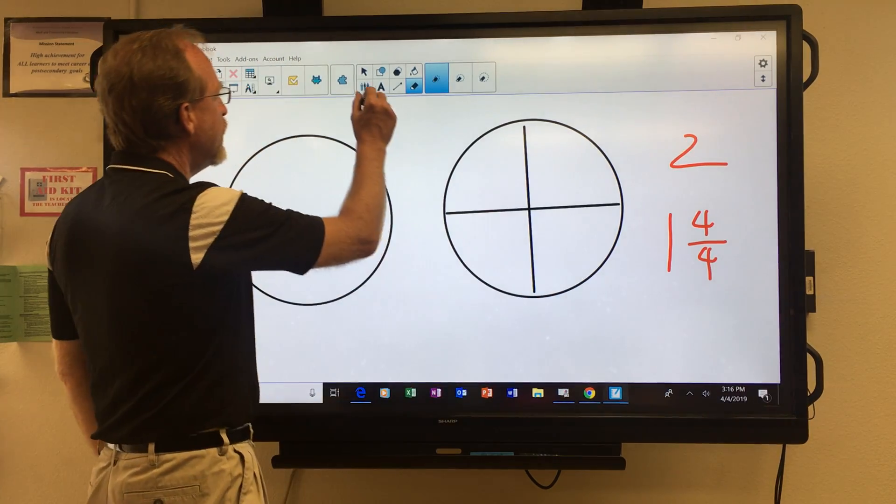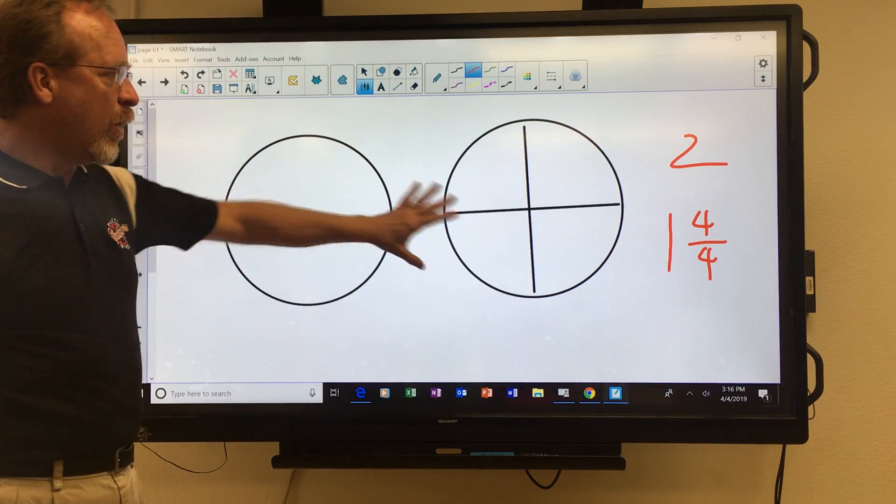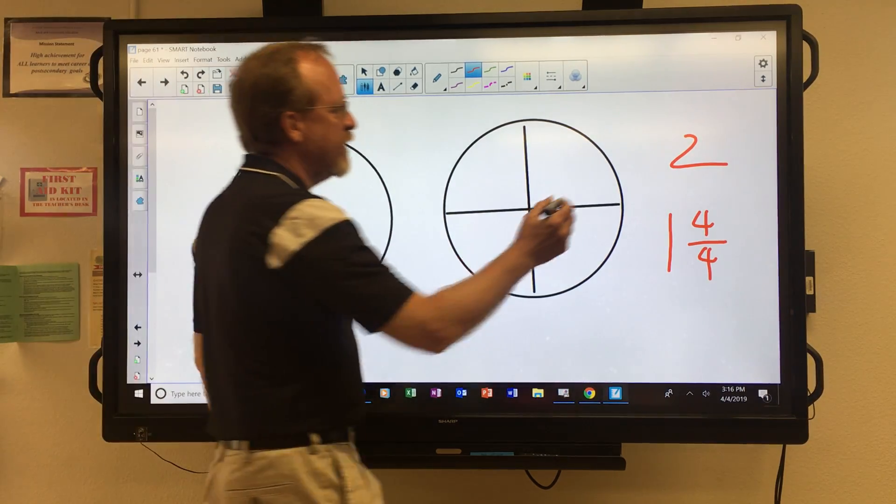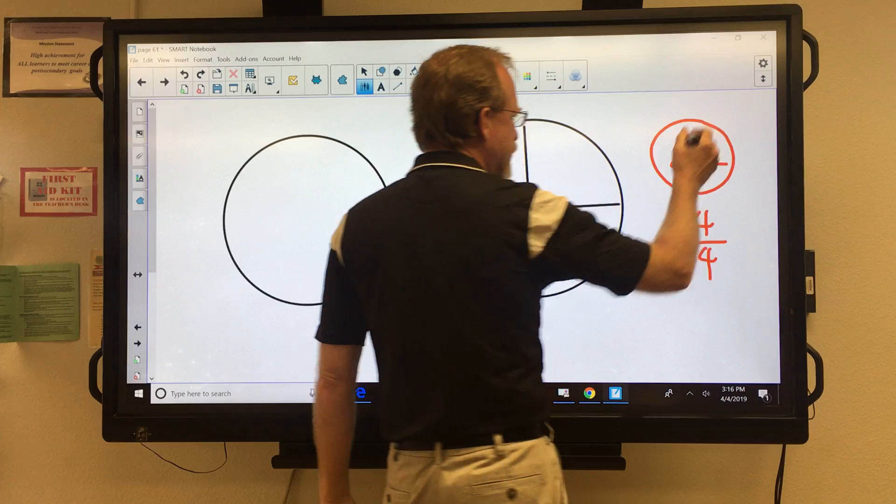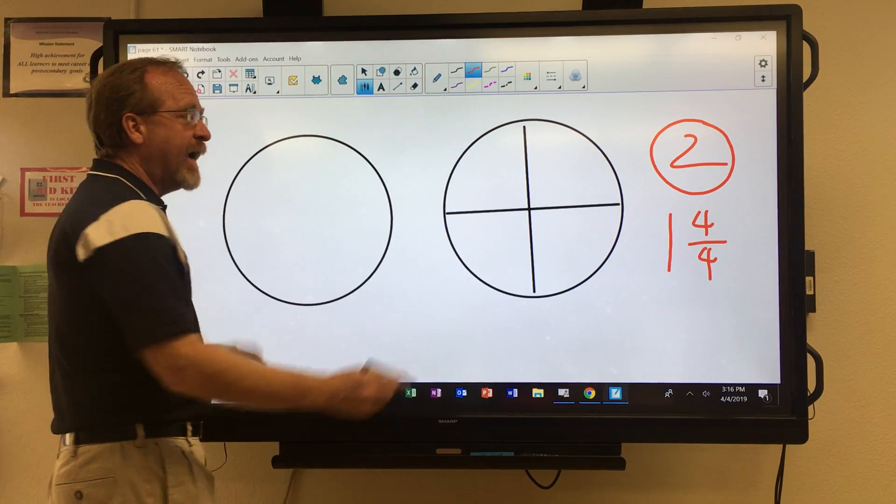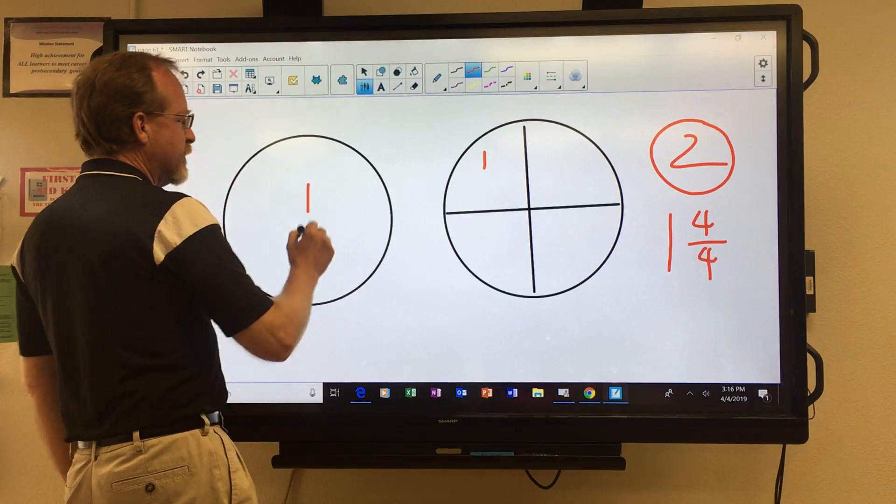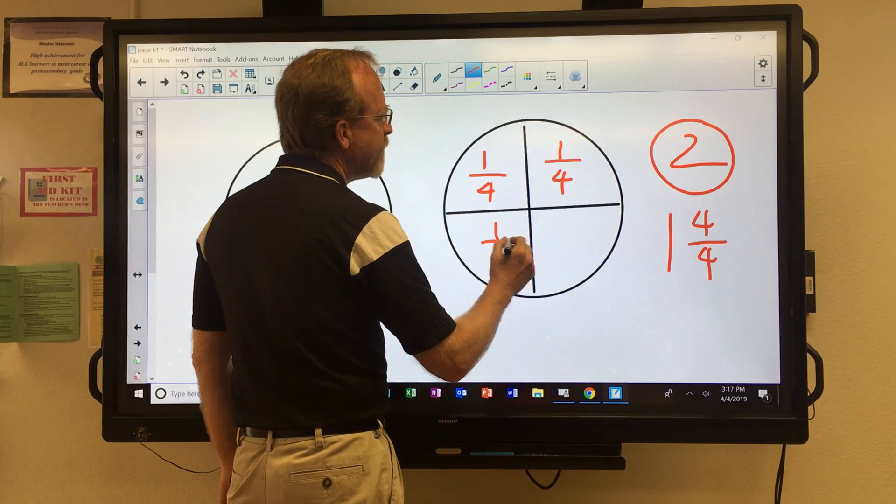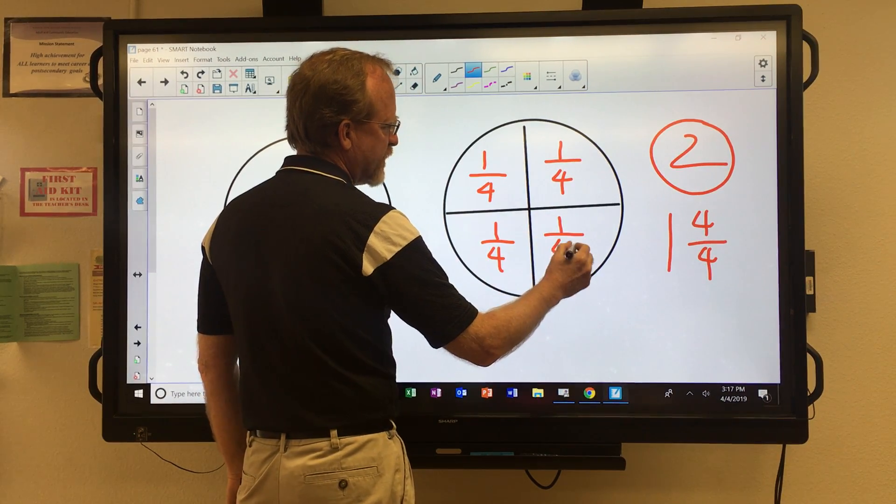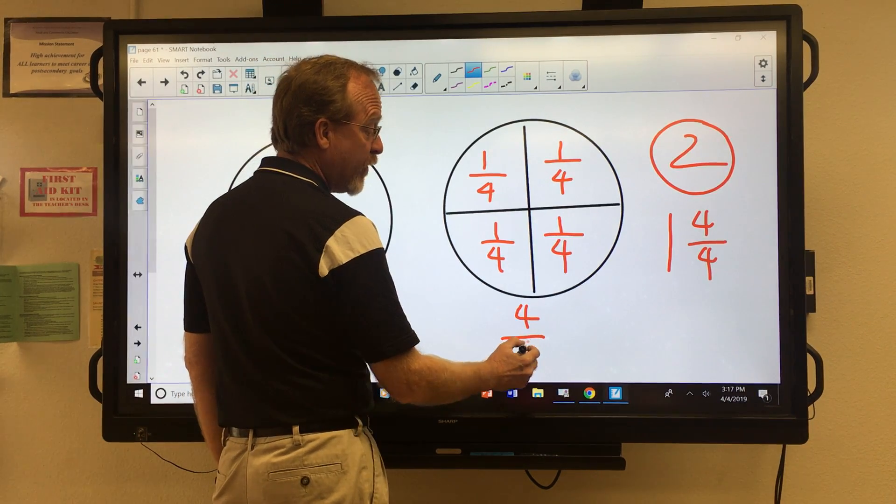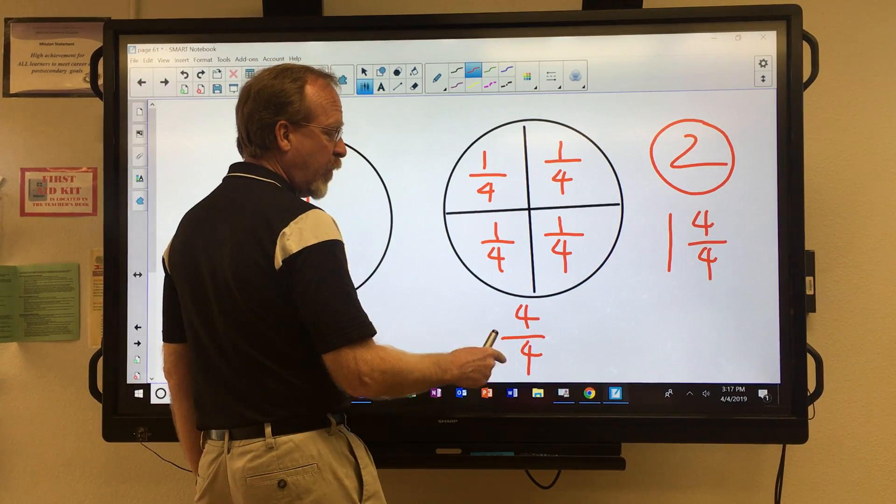Now, I think you would agree that you have a total of two pizzas, but there's different ways you can express that. You can express that, of course, as two. I have two pizzas. You could also express it as I have one pizza. Here's the one. And over here, I have four-fourths of a pizza. See how I've divided this pizza into fourths? And I have all the pieces, so I have four-fourths.